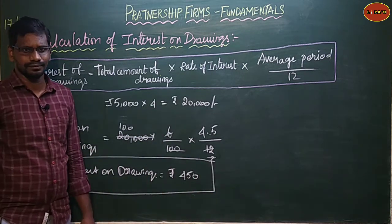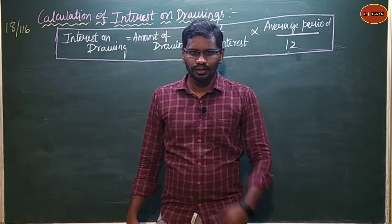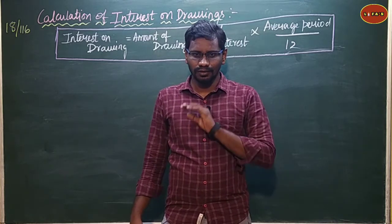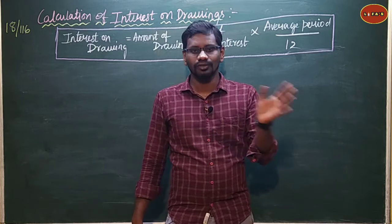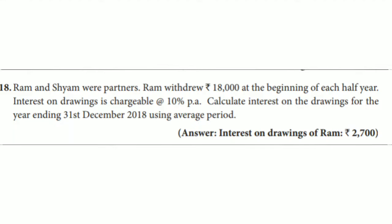Now the next problem is sum number 18 from your textbook page 116. Read and understand the question. Ram and Sam are partners. Ram drew Rs.80,000 at the beginning of each half year. Interest on drawings is chargeable at 10% per annum. Calculate interest on drawings for the year ending 31st December 2018 using the average period method.